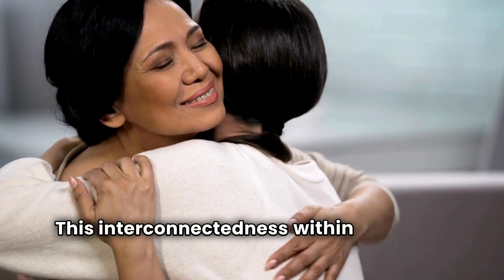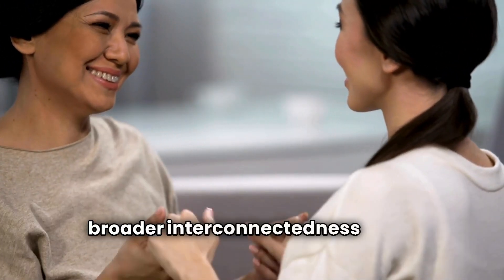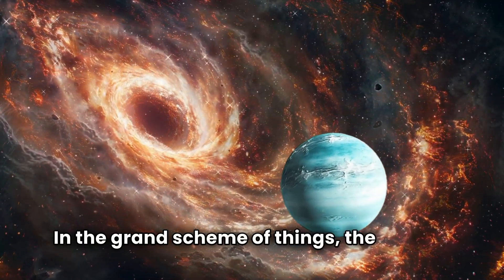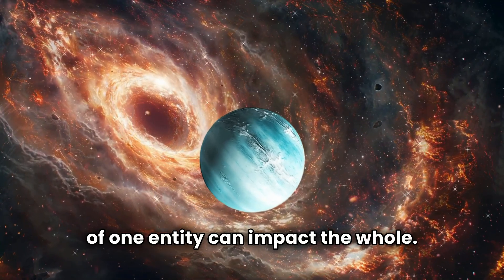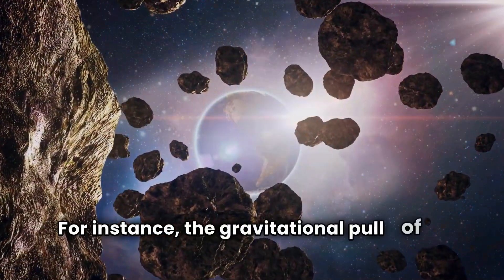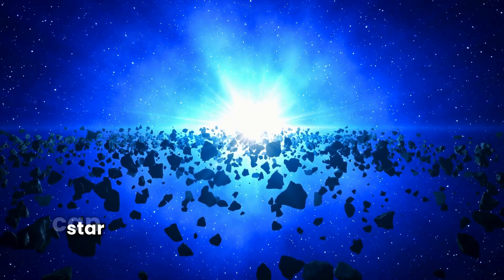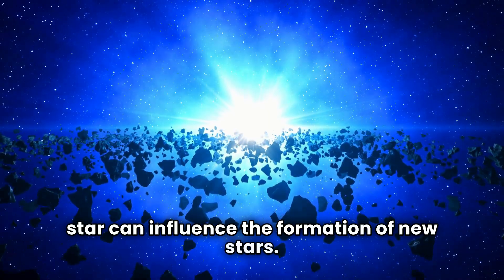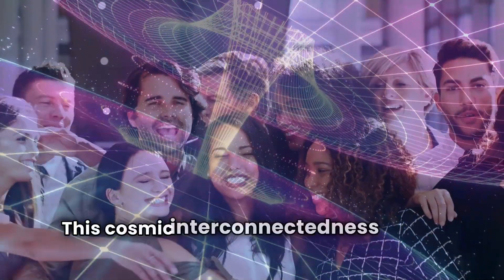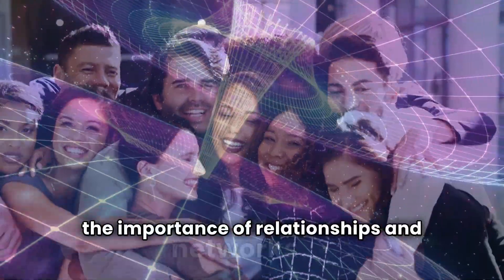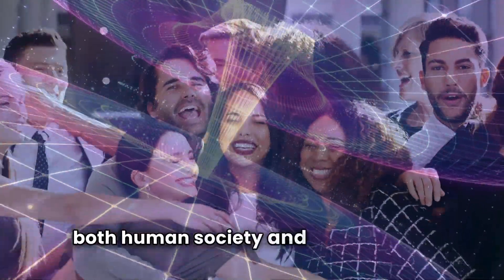This interconnectedness within humanity reflects the broader interconnectedness of the universe. In the grand scheme of things, the actions of one entity can impact the whole. For instance, the gravitational pull of one planet affects the orbits of others, and the energy of one star can influence the formation of new stars. This cosmic interconnectedness mirrors the way our emotions and social bonds connect us, emphasizing the importance of relationships and networks in both human society and the universe.